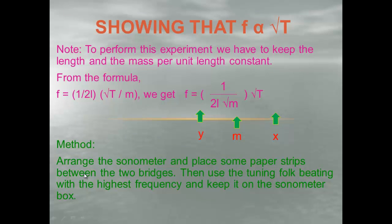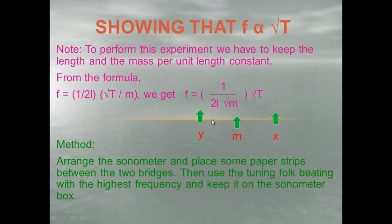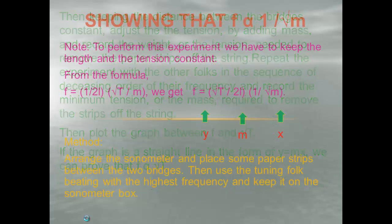As the method for Experiment 2: arrange the sonometer and place paper strips between the two bridges. Using the tuning fork with the highest frequency, keep it on the sonometer box. Keep the distance between the bridges constant to keep L constant, and use the same string to keep m constant. Adjust the tension by adding weight and record the tension needed to remove the paper strips. Repeat with other forks in decreasing order of frequency, recording the minimum tension needed. Plot the graph of f vs. √T; if it is a straight line of the form y = mx, this proves f is directly proportional to √T.